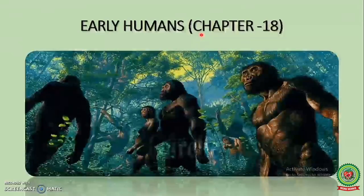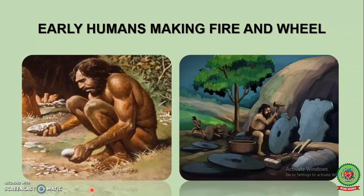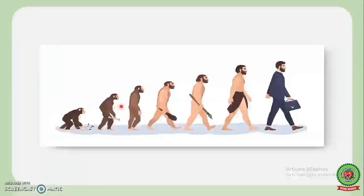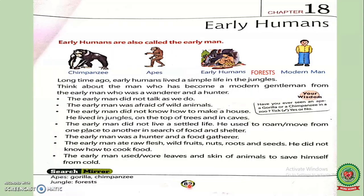We will discuss about what did he eat, what did he wear, and where did he live. We will also discuss about the weapons used by early humans. After that, we will discuss how did he learn to make fire. Our main objective is to teach you how did early humans change into modern men. Before starting this chapter, we will discuss keywords — early humans means people who lived a long time ago.